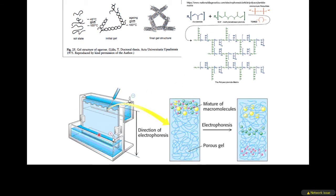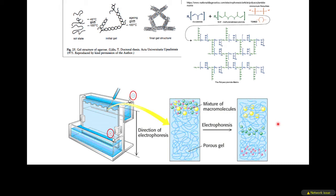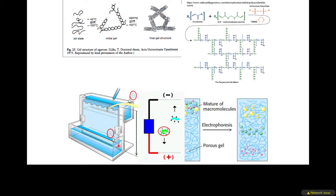You can cast gels between plates with wells, load your protein mixture at the top, and separate it — smaller molecules move through the pores more easily. In this case, the molecules are negatively charged and move to the positive electrode at the bottom of the gel.